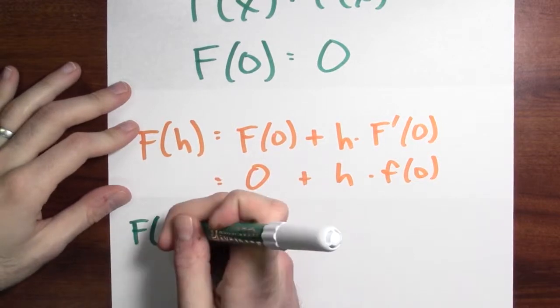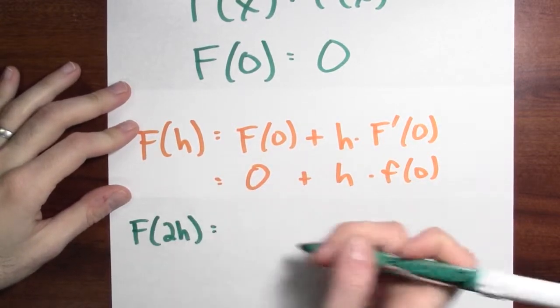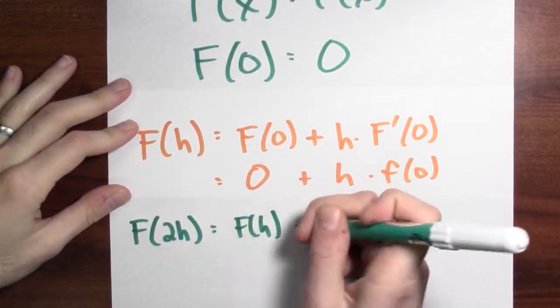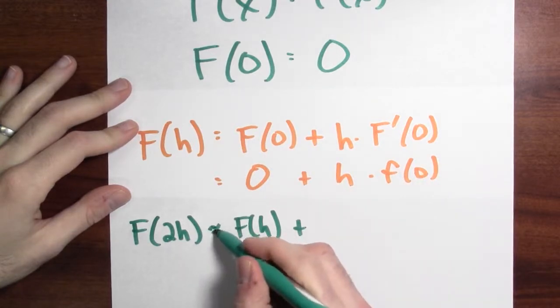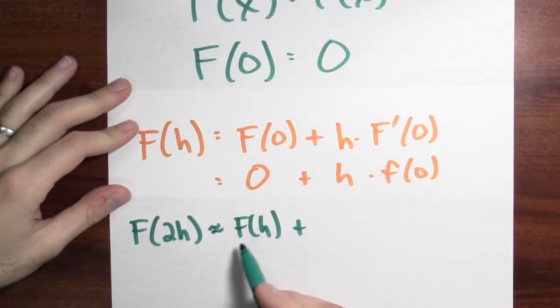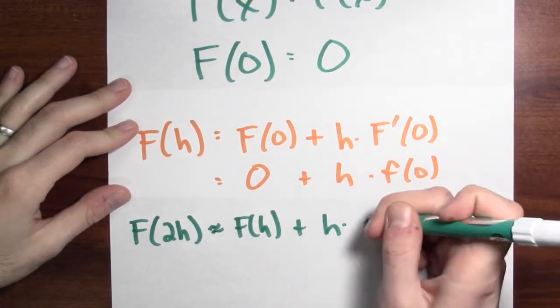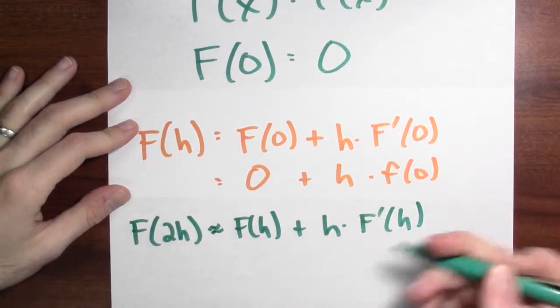And then I did it again. So I want to approximate big F at 2h. Well, that's big F at h, approximately. I mean, I'm writing equals, but I really mean approximately. Big F of h plus h times the derivative of big F at h, right?